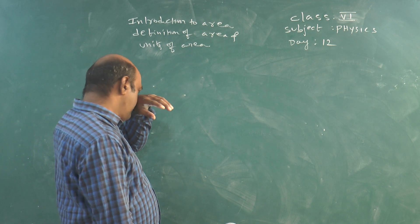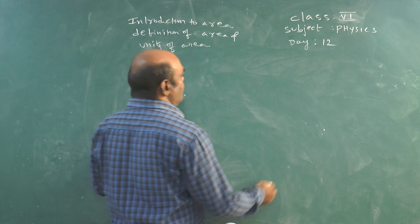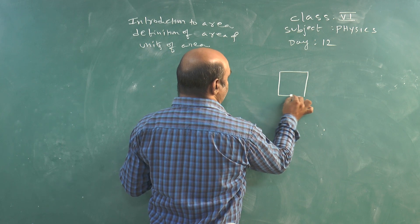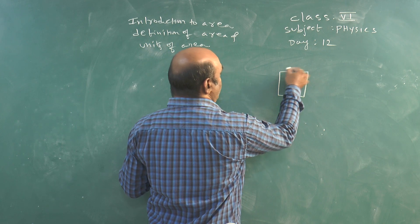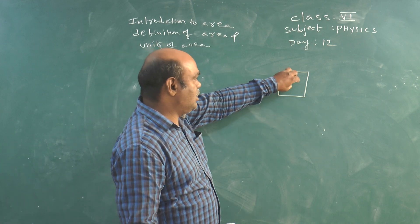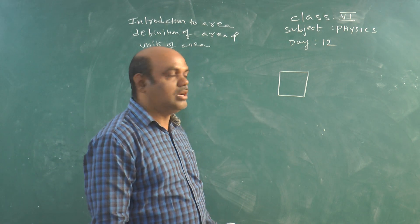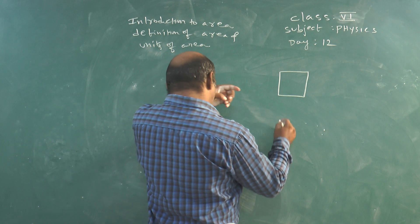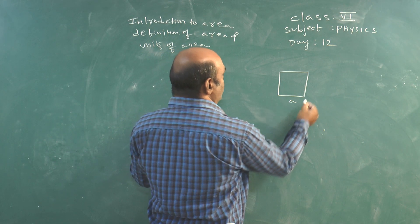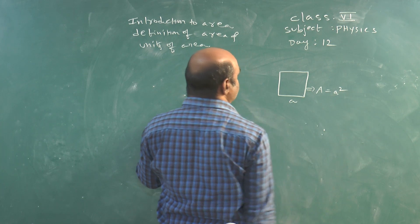So generally, area is nothing but the surface occupied by a body. For example, if you consider a square, this square is occupying some surface — it has some area. If the side length of the square is A, then its area is equal to A square.